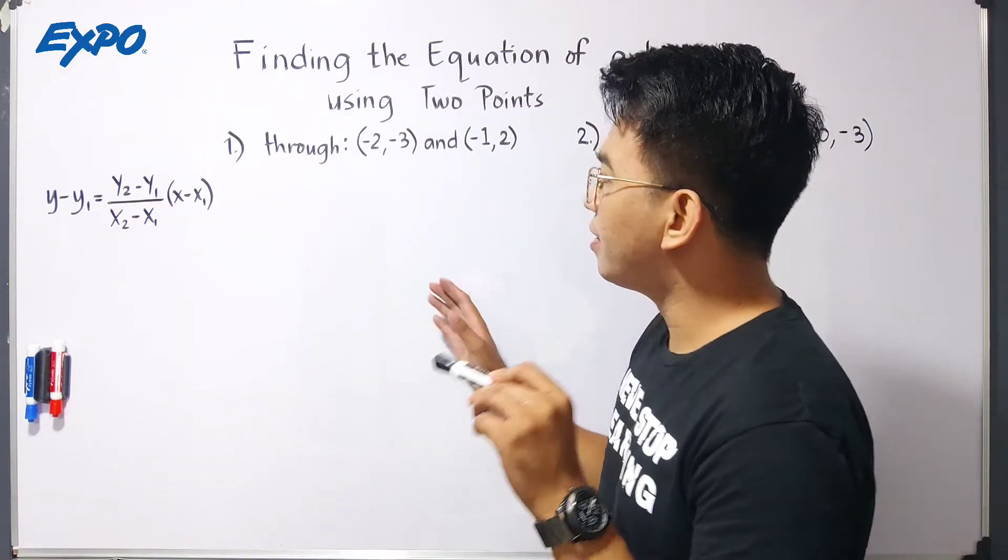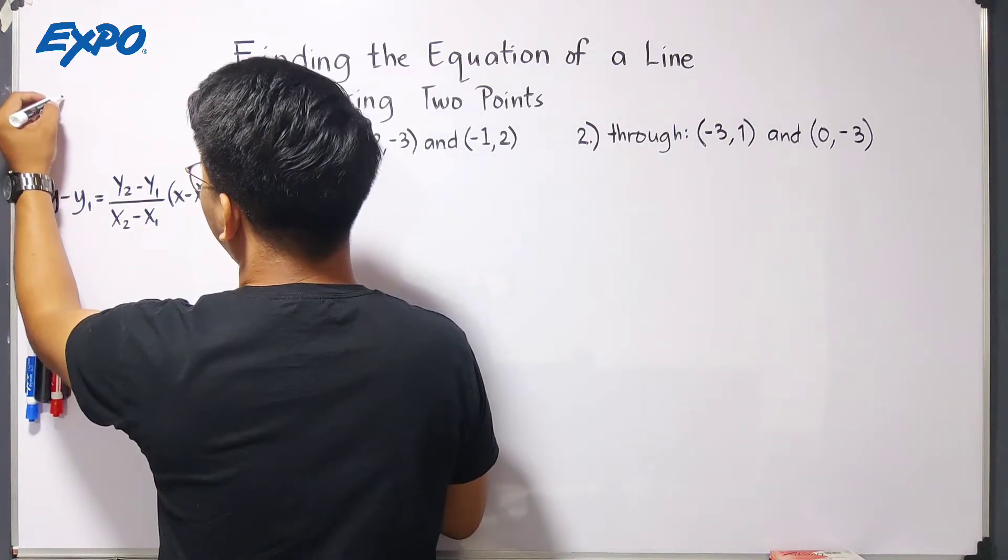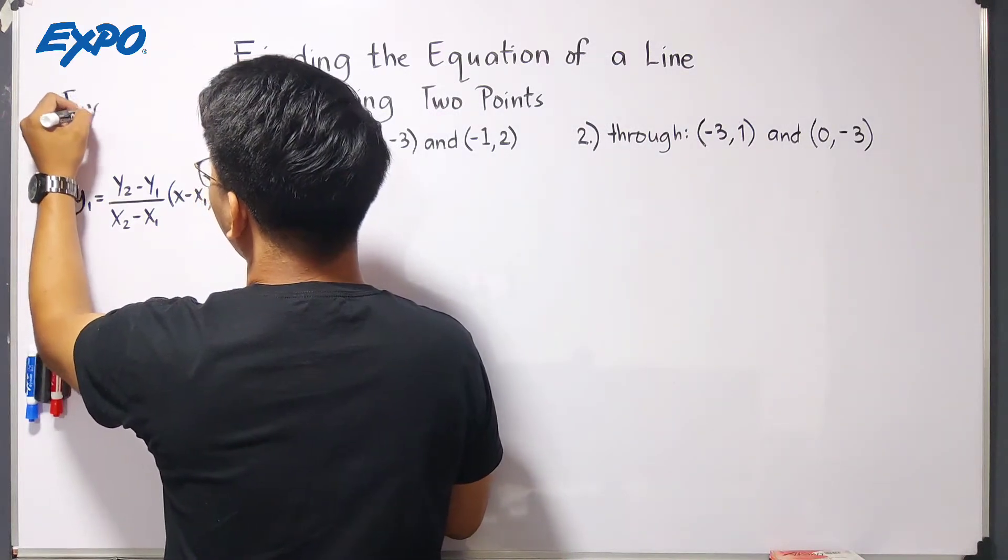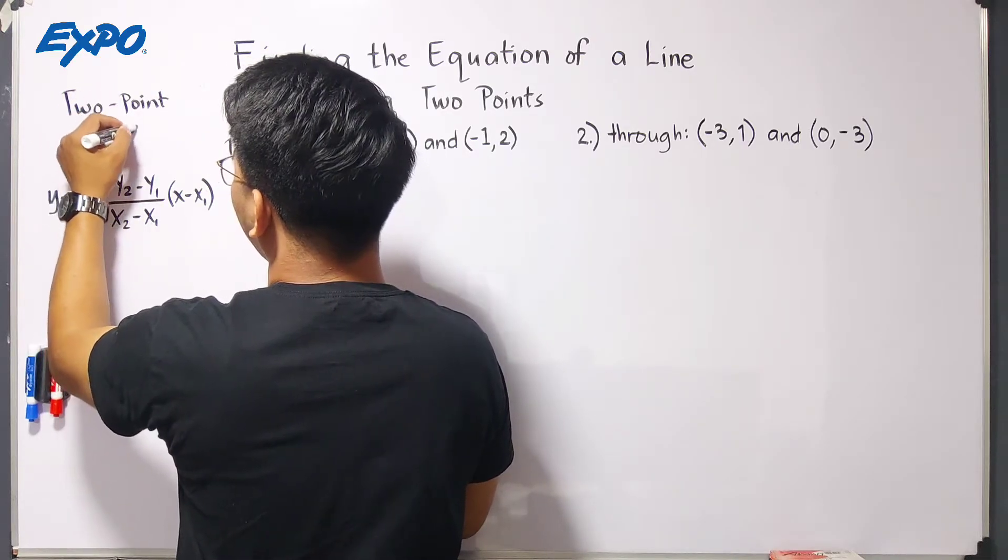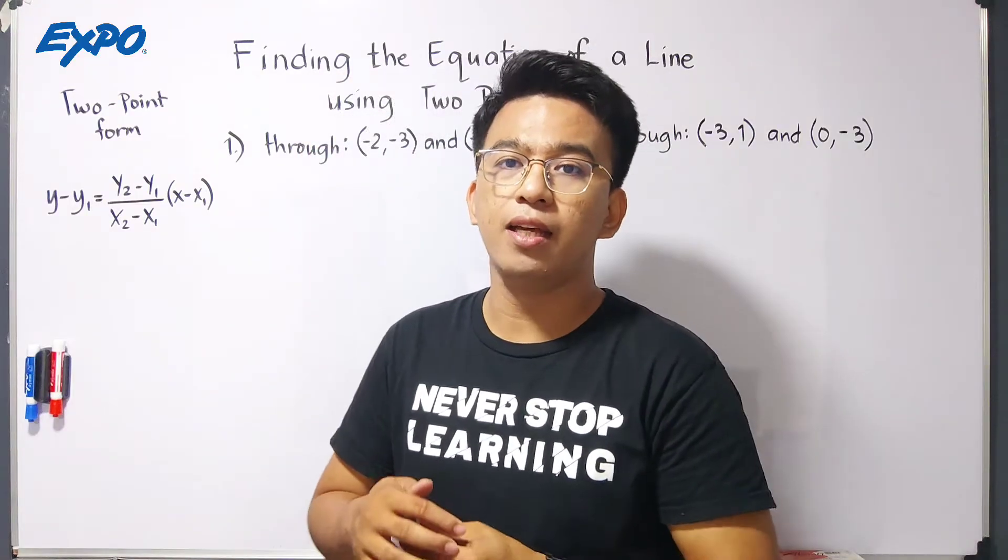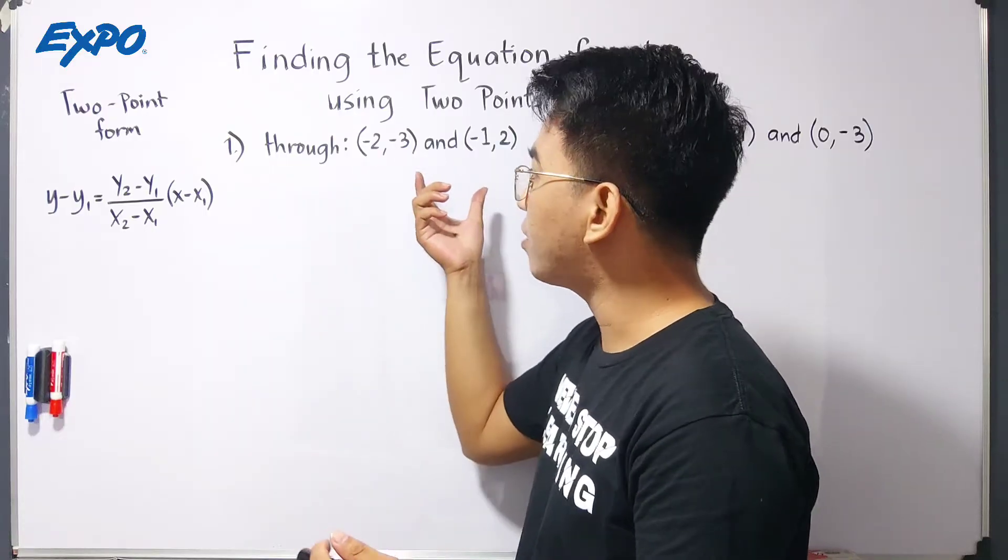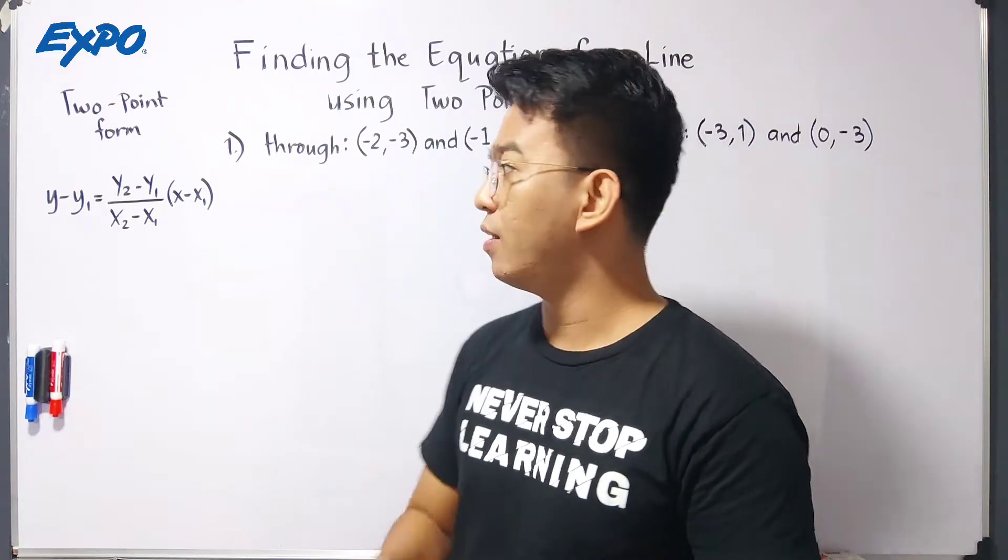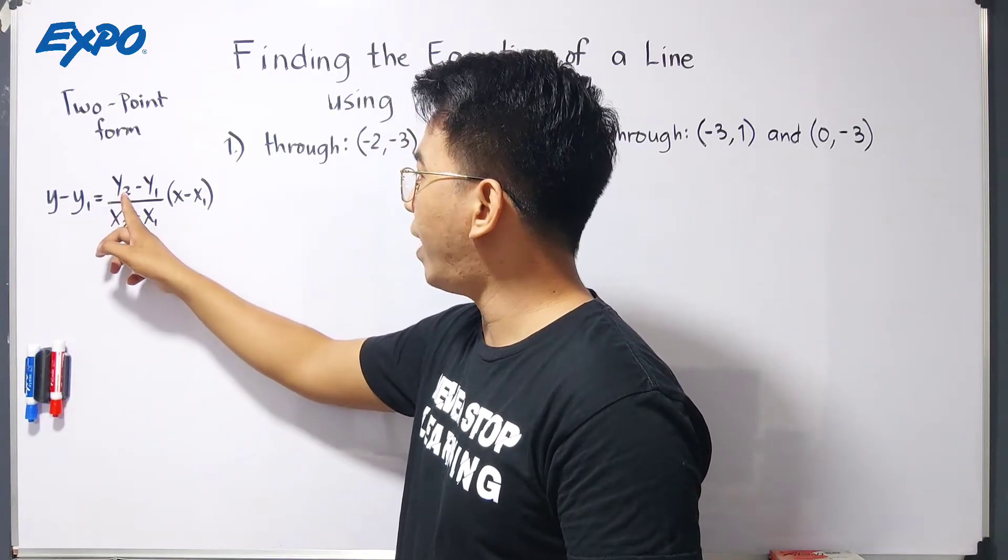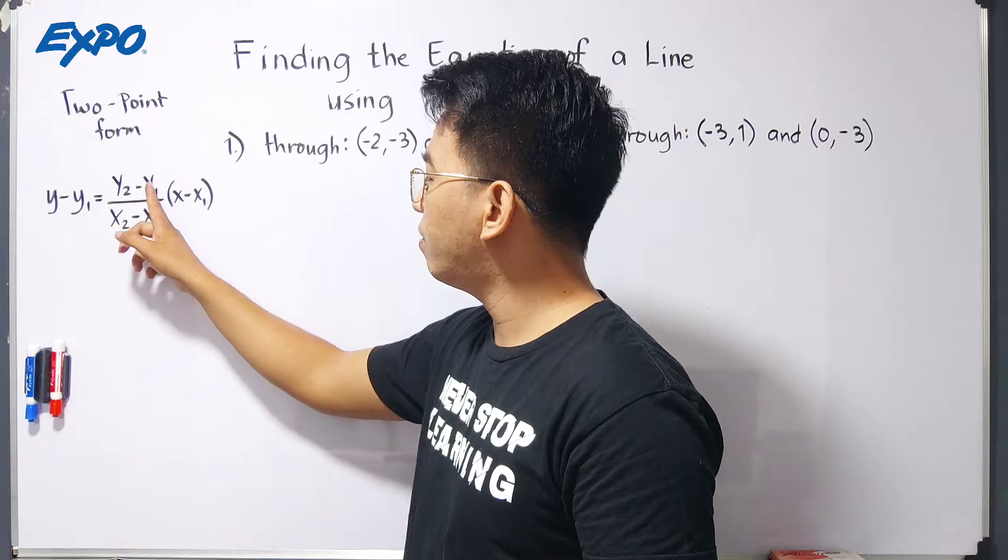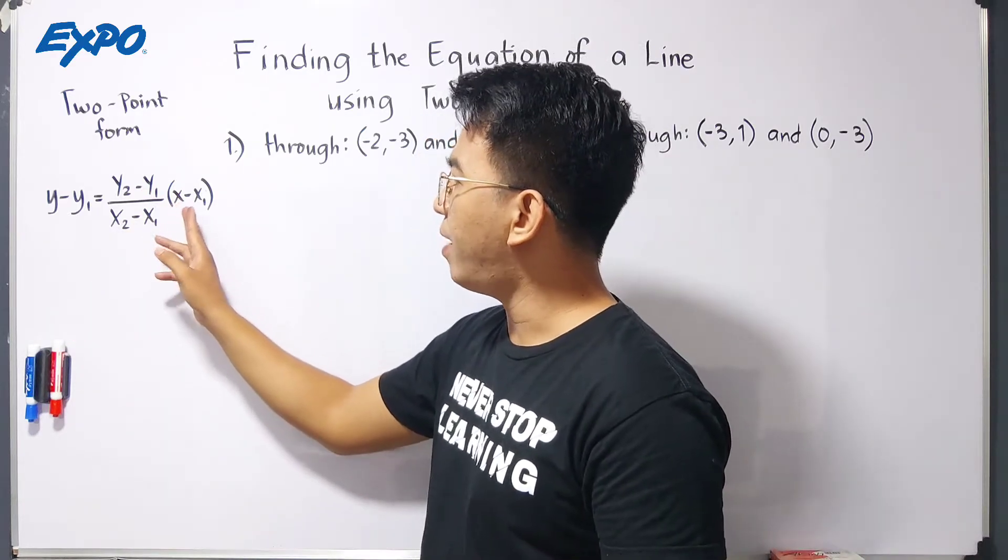What we have here is this formula. This formula is called two-point form. This is the form we'll use if we have two given ordered pairs of points to find the equation of a line. Our formula is y minus y sub 1 equals y sub 2 minus y sub 1 over x sub 2 minus x sub 1 times x minus x sub 1.